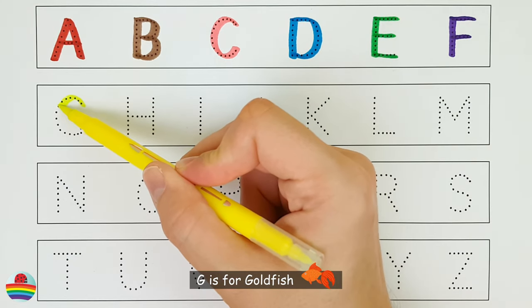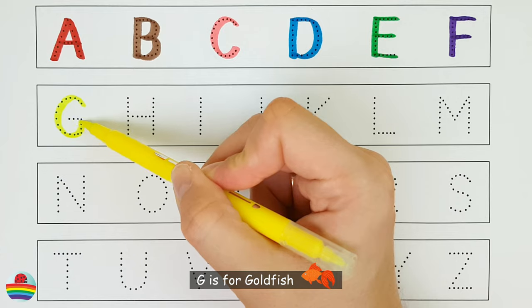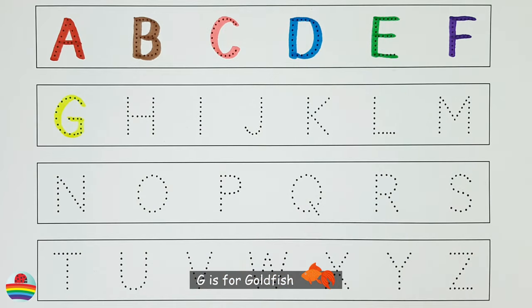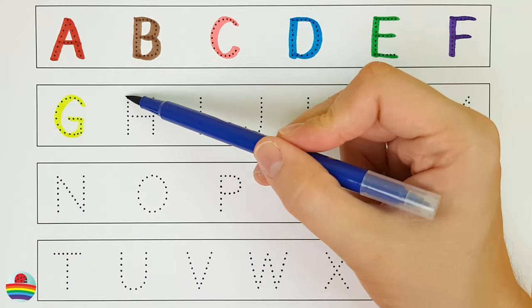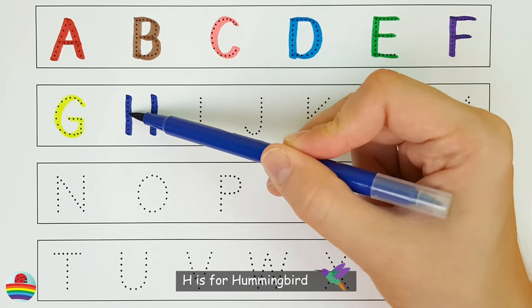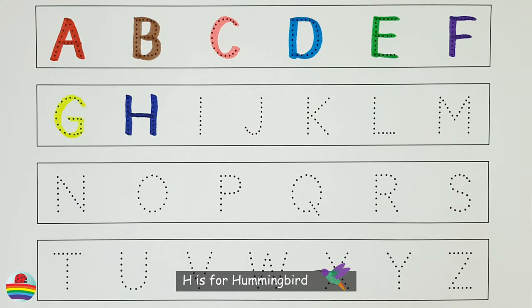G. G is for goldfish. G. H. H is for hummingbird. H.